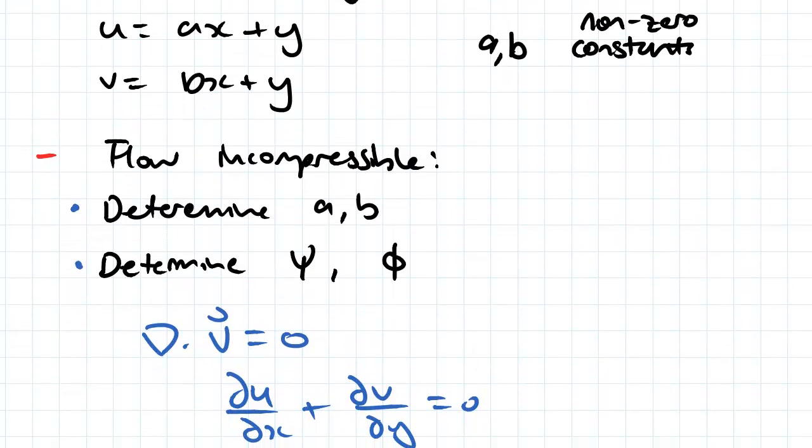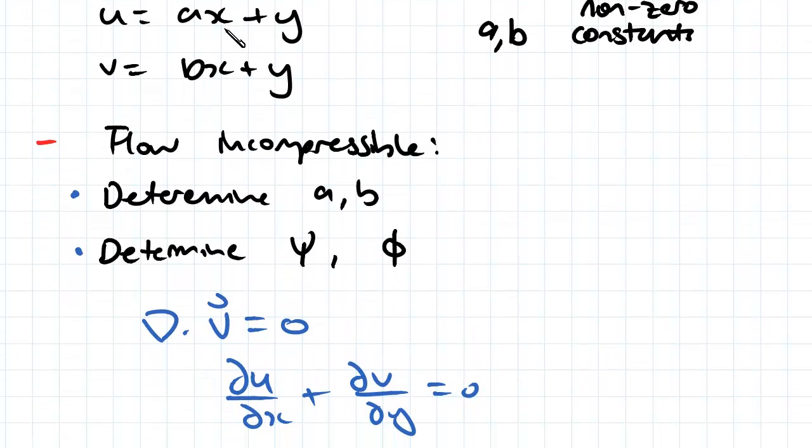So just taking the derivative of u with respect to x, we're just going to get a and v with respect to y, we're just going to get one.